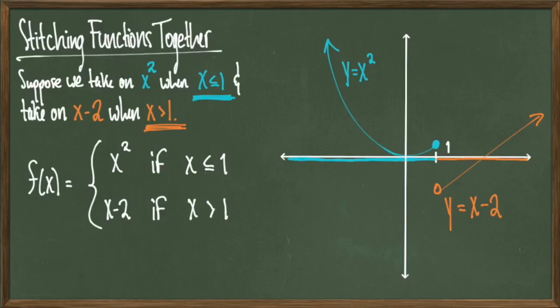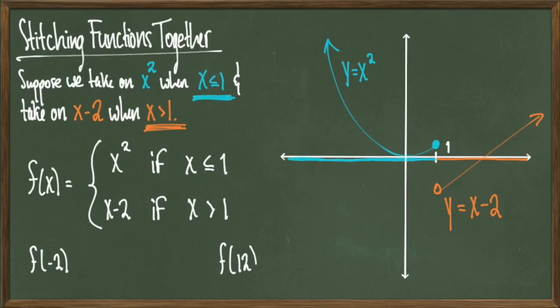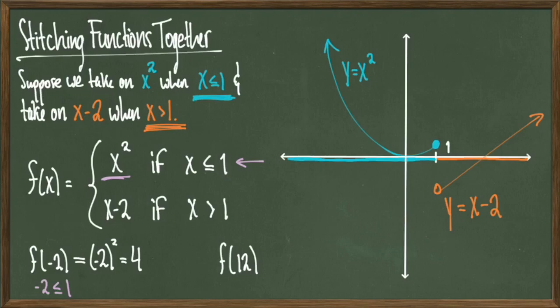Let's talk about how to evaluate piecewise functions at given points. We'll evaluate f of negative two and f of positive twelve. The way to evaluate piecewise functions is to look at the input and try to figure out which situation it goes into. Looking at f of negative two, we know that negative two is less than or equal to one, so we'll take on x squared. Therefore, f evaluated at negative two comes out to negative two squared, which is four. For f of twelve, we know that twelve is greater than one, so we'll take on x minus two, giving us that f of twelve equals twelve minus two, which equals ten. So evaluating piecewise functions at points means that you look at your input, figure out which situation you fit, and then figure out the corresponding function that goes with that.